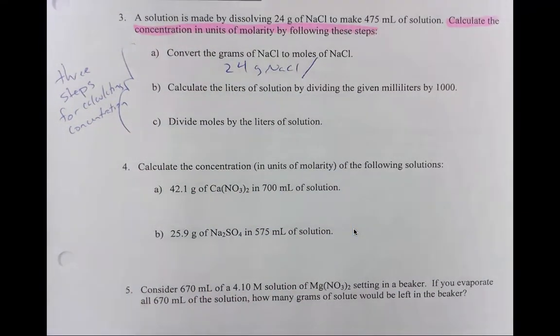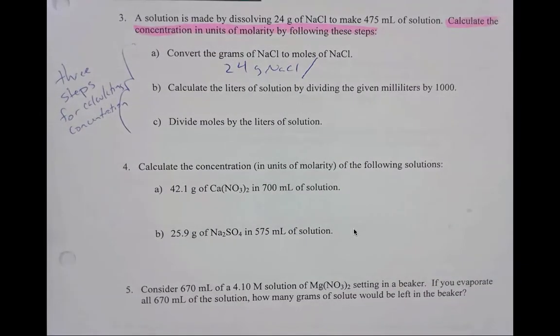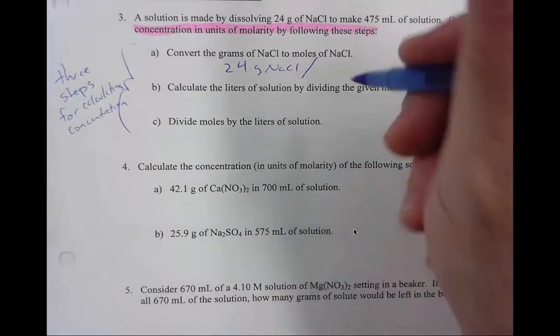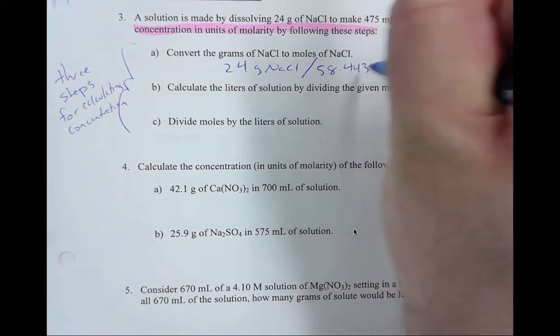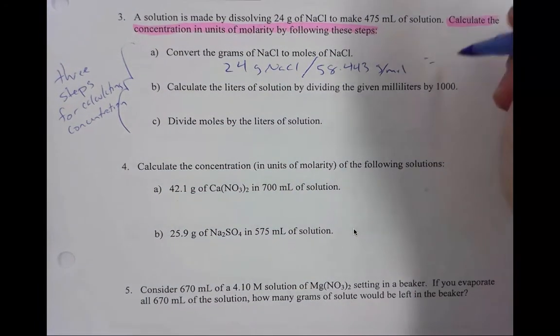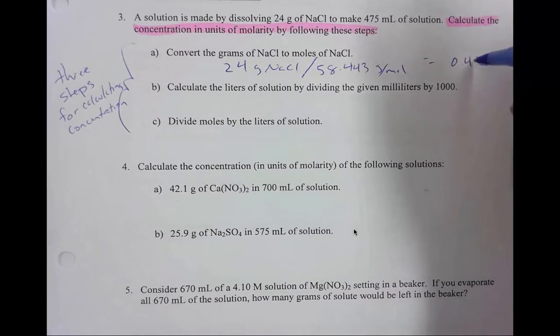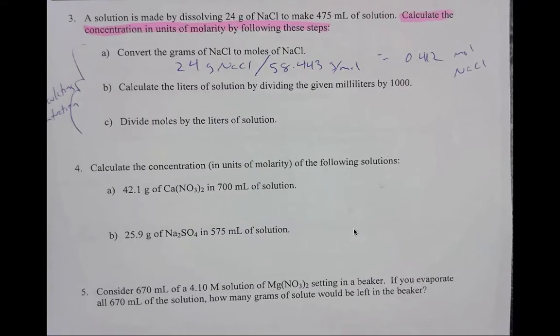Remember guys, whenever we calculate molar masses, we look on the periodic table. So you would add the mass of sodium and the mass of chlorine together. When you do that, it is 58.443 grams per mole, which, when you solve, would give you 0.41212 moles NaCl.